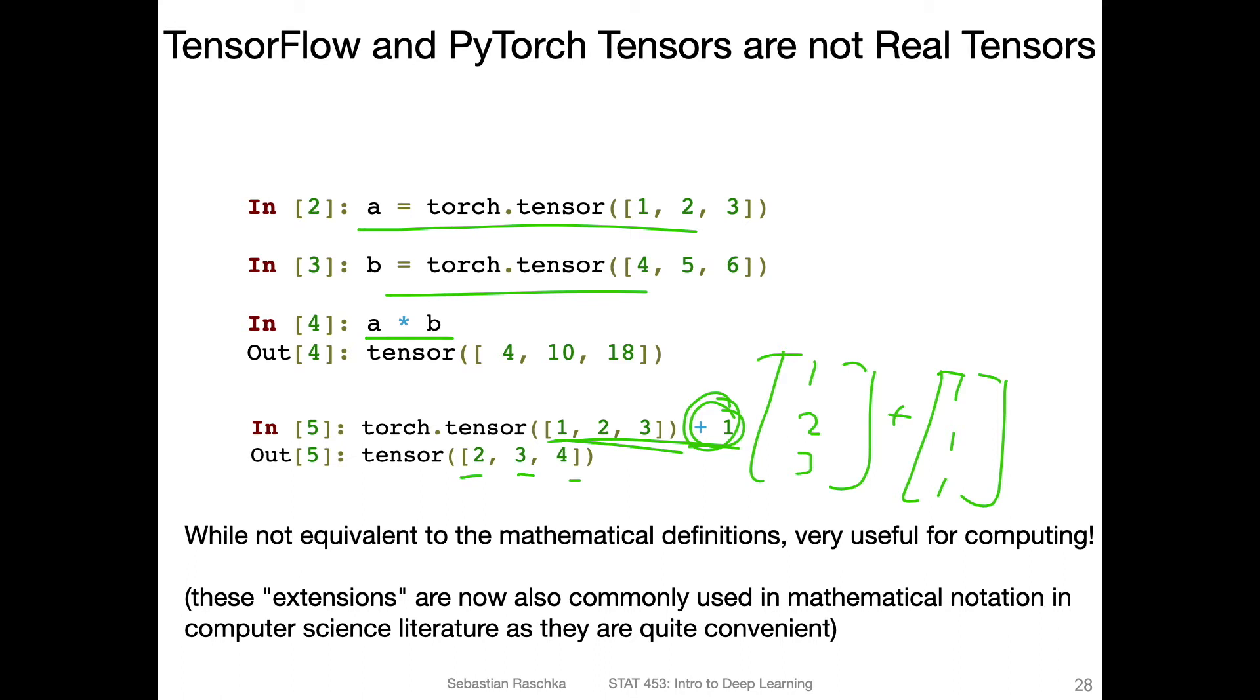In a traditional linear algebra sense, what you would have to do is create a vector of ones and add it. You would have 123 plus 111, right? That would be the linear algebra way. But here, you don't have to create this explicitly, it will implicitly add this one, which is kind of nice. This is also related to the concept of broadcasting.